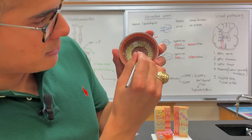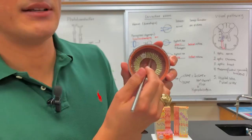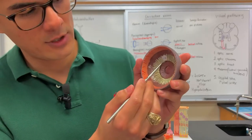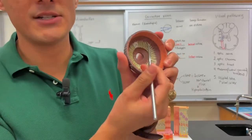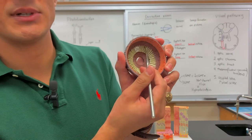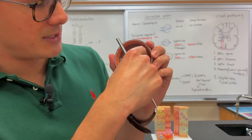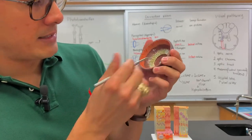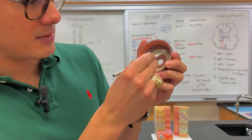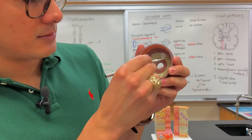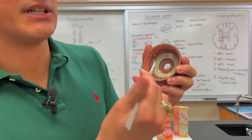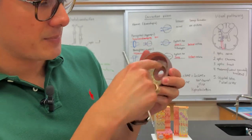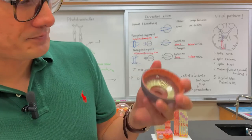You see these little ligaments here — number 24 — these are the suspensory ligaments. That's what's going to attach to the lens. And then this is part of the ciliary muscle — this is where the ciliary body would be.